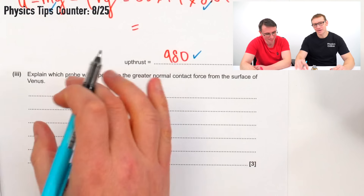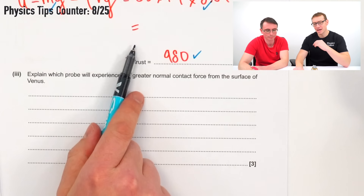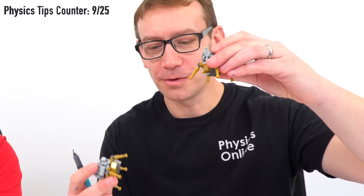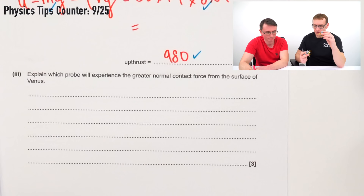Now we have an explain question for three marks. These are where, if you're working hard and studying well, you can get the advantage over other students. Most students will have got the calculation, but very few will go confidently into an explain question thinking they can definitely get all three marks. The question asks us to explain which probe — A on the North Pole or B on the equator — will experience the greater normal contact force from the surface of Venus.